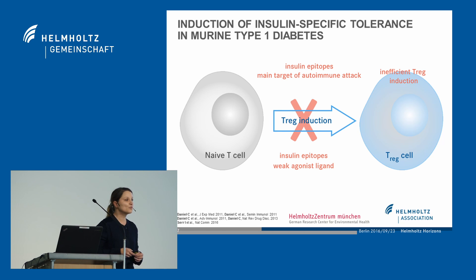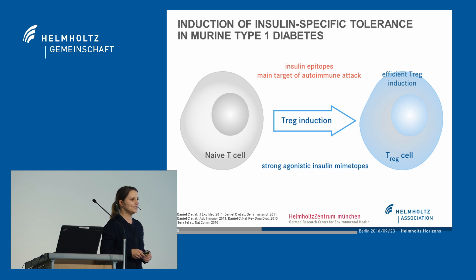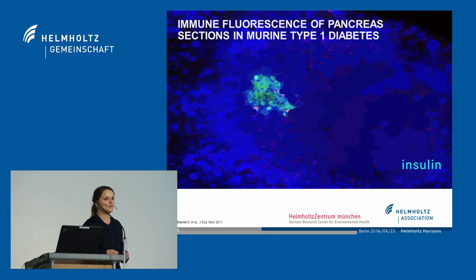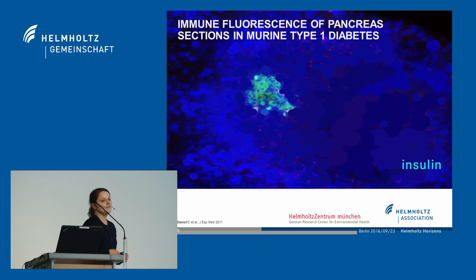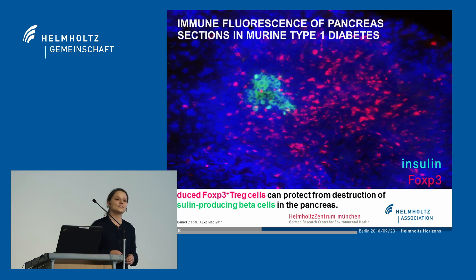We then asked how can we improve this insulin-specific T-rex induction, and we therefore devised strong agonistic mimetopes, which resulted in efficient T-rex induction. We then asked whether these strong agonistic insulin mimetopes could indeed impact type 1 diabetes by inducing immune tolerance. We performed immunofluorescent stainings of pancreatic sections in murine type 1 diabetes — shown here for insulin in green and the blue fluorescent DAPI stain as a control — and showed that FOXP3-positive T-rex cells induced by these insulin mimetopes, shown here in red, can indeed protect from the destruction of the insulin-producing beta cells in the pancreas, thereby preventing type 1 diabetes.